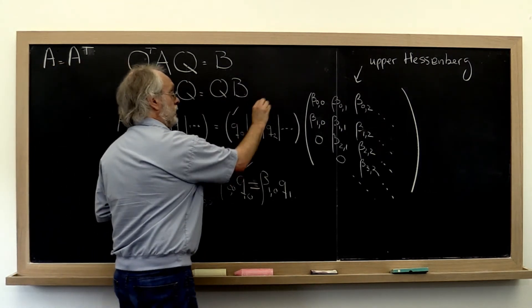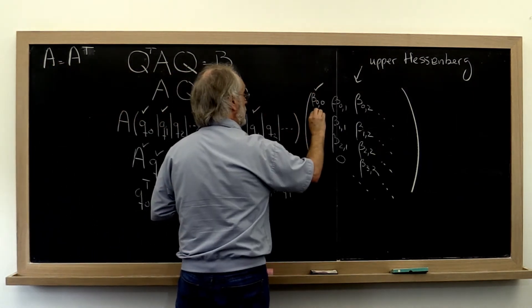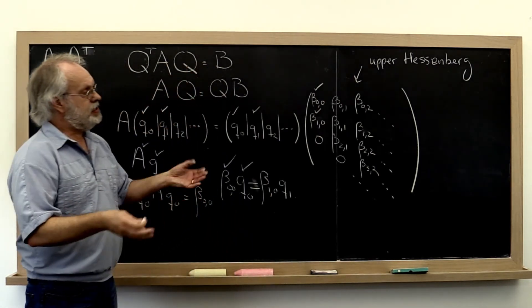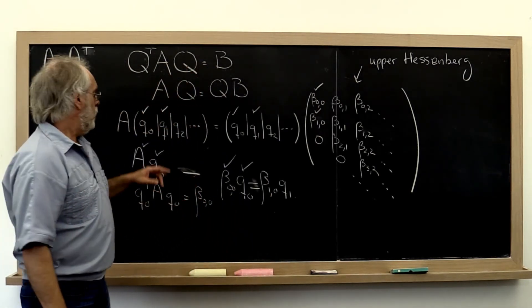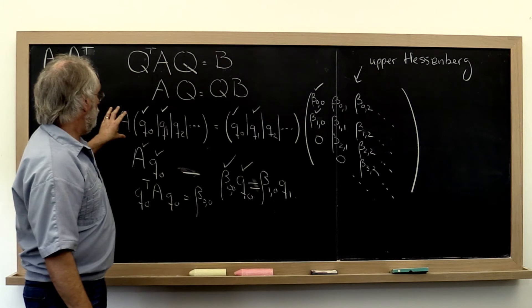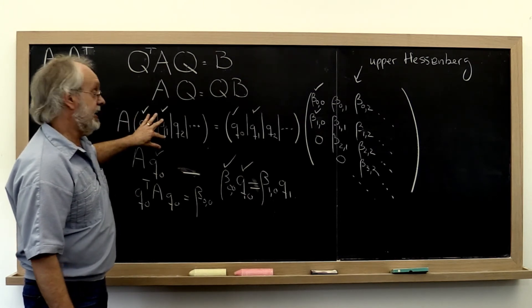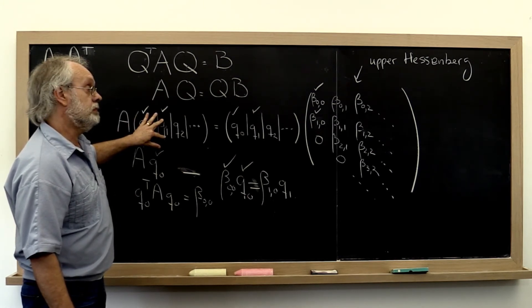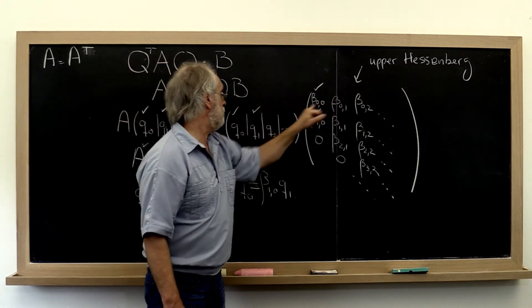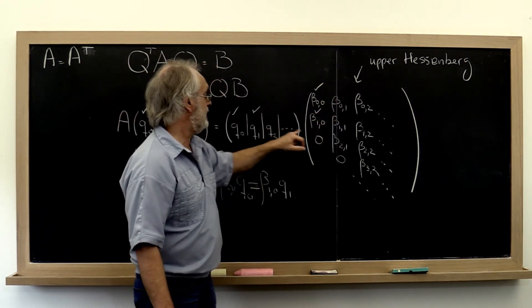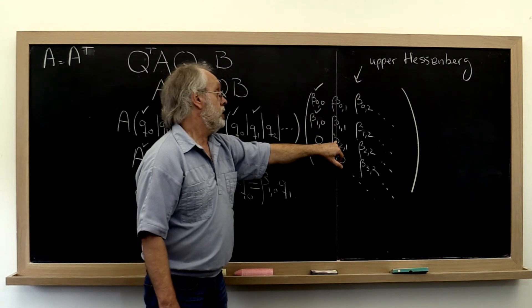At that point we have uniquely specified Q zero and Q one. We know what this is, we know what this is, we know what that is, and we know what that is. And you can see where this is going. We can now on the left compute A times Q one to be the next column. Here we can take this times that plus this times that plus this times that.